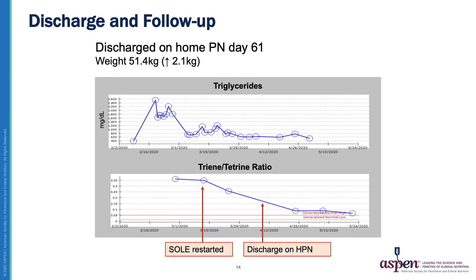Here you can see the patient's triglycerides continued to come back down towards his baseline, even after the soybean oil lipid emulsion was restarted. Sirolimus was also discontinued during this time, which helped correct the hypertriglyceridemia. His T-to-T ratio improved as well, and the patient was discharged on PN day 61, with continuing close follow-up by the home PN team. His weight was back up to 51.4 kilograms.